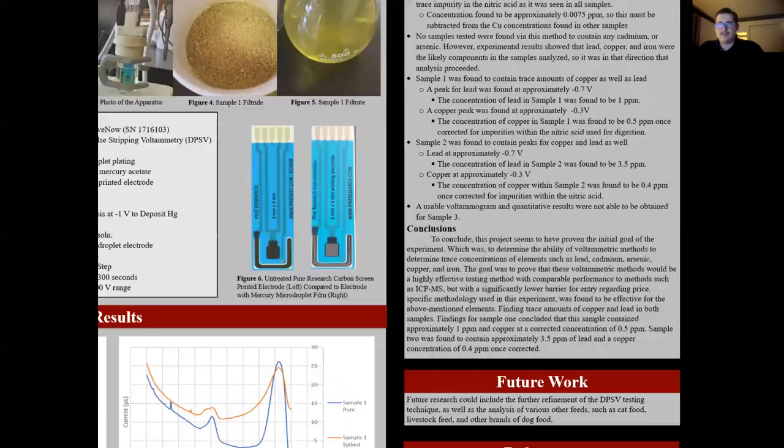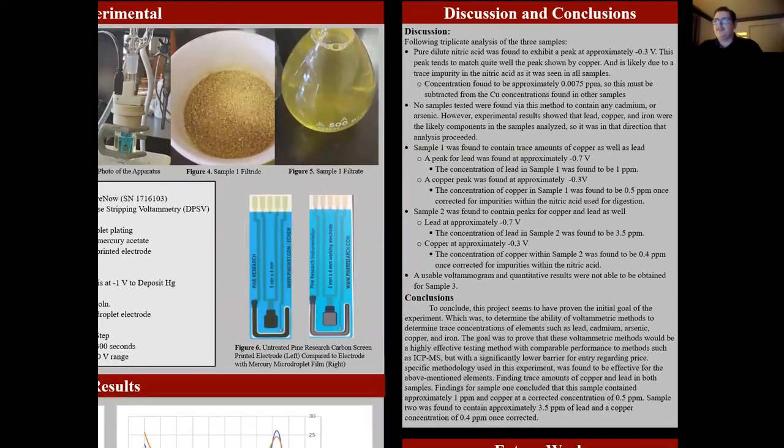For the results of this research, pure dilute nitric acid was found to exhibit a peak at about negative 0.3 volts. This peak tends to match quite well with the peak shown by copper and is likely due to some sort of impurity in the nitric acid, as it was seen in all samples. The concentration was found in pure nitric acid to be about 0.0075 ppm. This must be subtracted from the copper concentrations found in other samples.